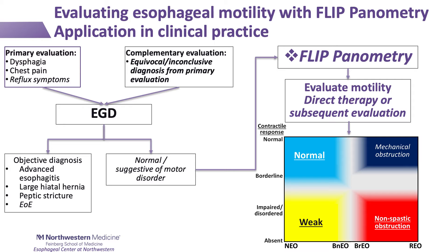However, if the endoscopy is normal or suggestive of a motor disorder, and the plan is to pursue an evaluation of esophageal motility, FLIP planometry can be utilized right at the time of that initial endoscopy. In some cases, the FLIP planometry may be sufficient to confidently reach an esophageal motility diagnosis and obviate the need for manometry, and a management plan could be carried out from the time of that encounter.